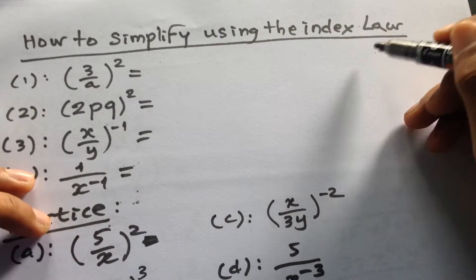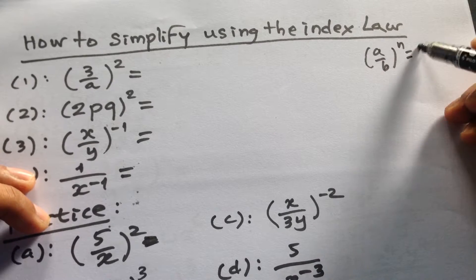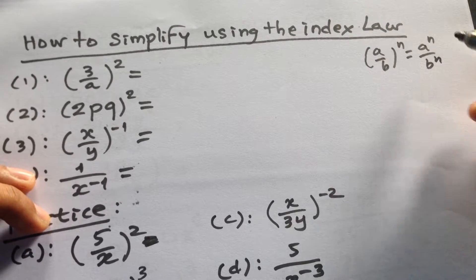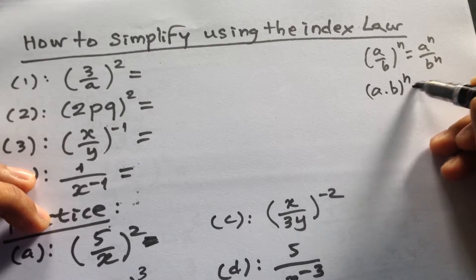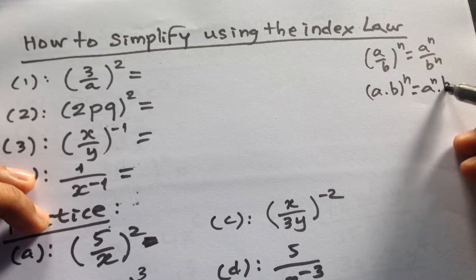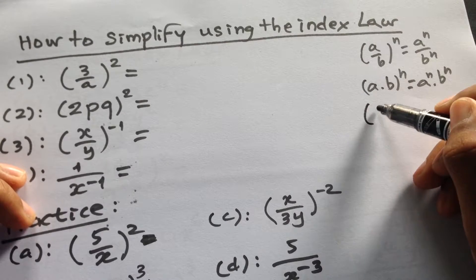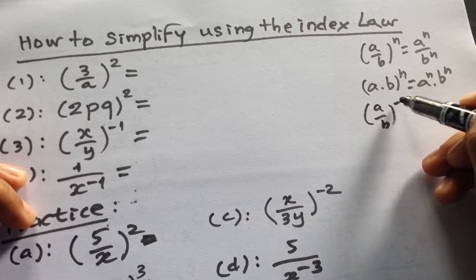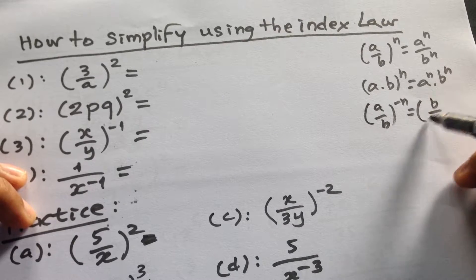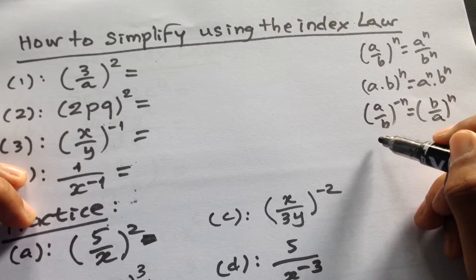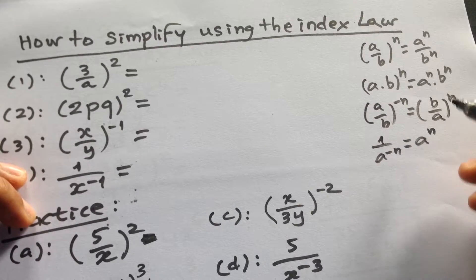Index law: (a divided by b) to the power n equals a power n divided by b power n. We have (a times b) to the power n equal to a power n times b power n. And we have (a divided by b) to the power minus n equals (b divided by a) power n. Also, 1 divided by a to the minus n equals a power n.